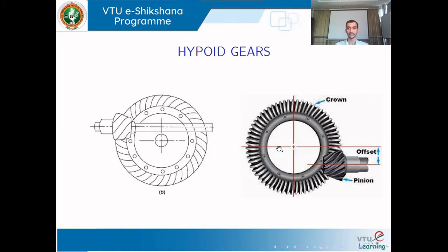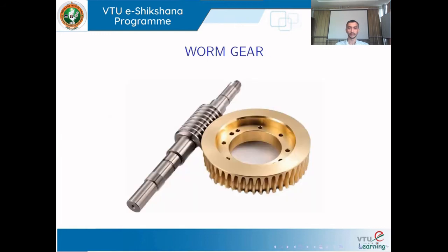Hypoid gears are another example for power transmission between shafts that are neither intersecting nor parallel. In the case of worm gears, whenever a very large speed reduction is needed — from 50:1 to 500:1 — such gears are used.